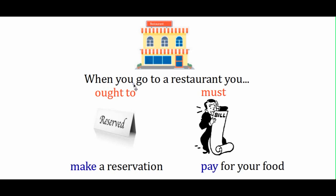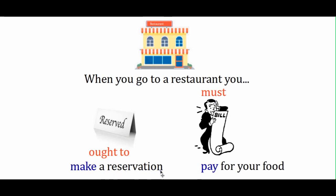Next: when you go to a restaurant, you ought to — a modal of suggestion — or must — a modal of obligation. Options: make a reservation, and pay for your food. When you go to a restaurant, you don't really have to make a reservation — there might be free tables, so it's a suggestion, a good idea but not an obligation: 'You ought to make a reservation.' But pay for your food — when you finish your meal you have no choice, it's an obligation: 'You must pay for your food.'